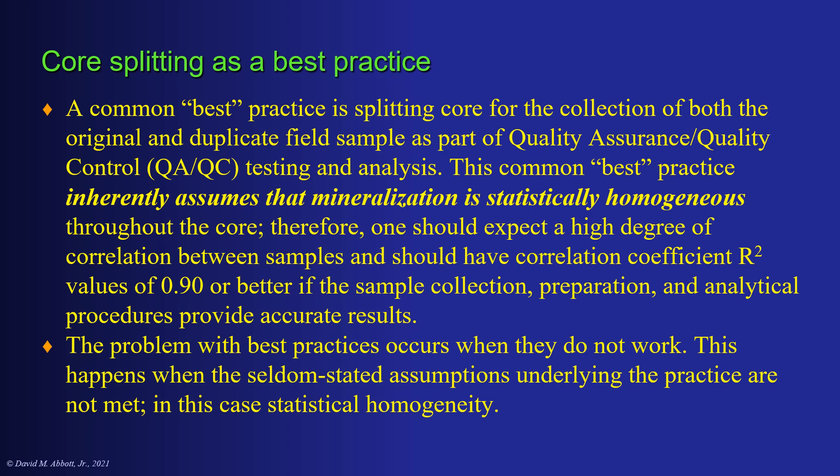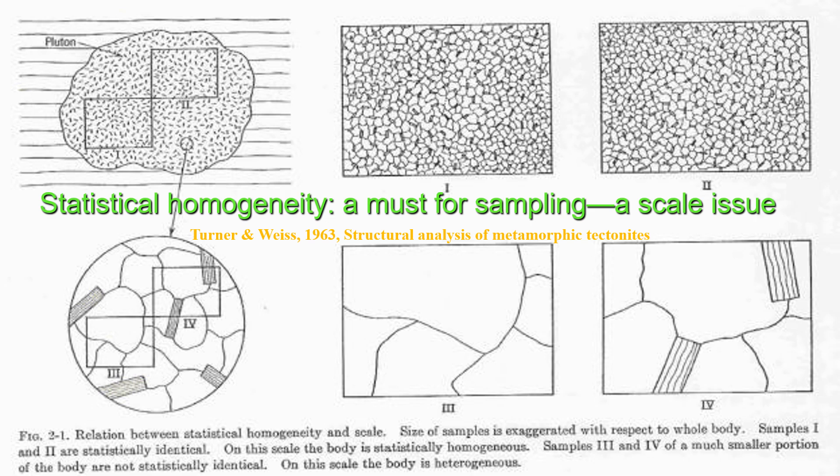The problem with the practice occurs when this doesn't happen — when the seldom-stated assumptions underlying the practice are not met; in this case, that the sample is statistically homogeneous. Statistical homogeneity is a must for sampling, and it's a scale issue, as pointed out by Turner and Weiss in their 1963 structural analysis of metamorphic tectonites.